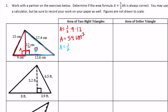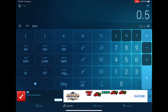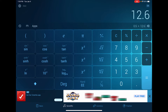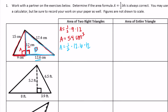Now for triangle B in blue: the area equals one-half, the base is 12.6, and the height is 12. So 0.5 times 12.6 times 12 gives us 75.6 centimeters squared. Adding triangle A and triangle B together: